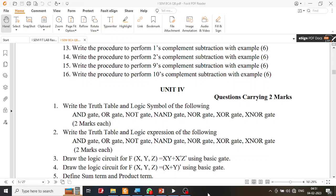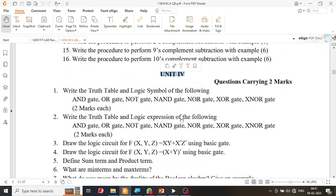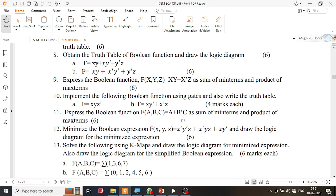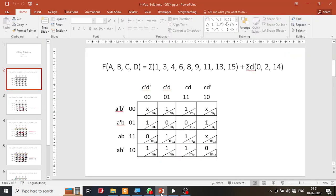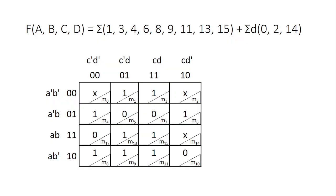In this session, I am going to solve one more K-map equation that is available in unit 4 of the question bank. I am going to go to question number 13 of unit 4 and select question H here. This question has many minterms as well as a don't care condition. Let us try to reduce this equation and finally draw the logic diagram for the reduced equation. I have copied the minterms and the don't care condition into PowerPoint.